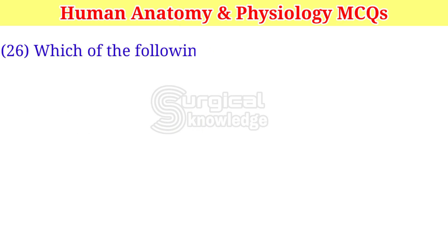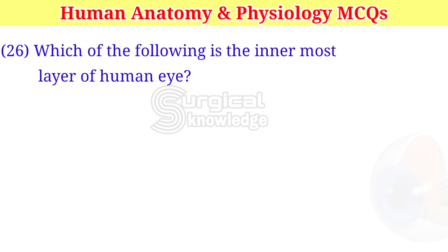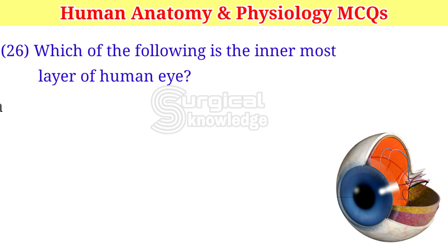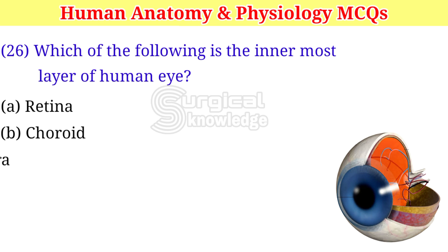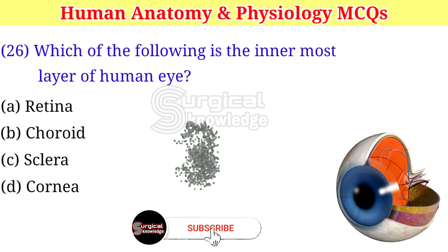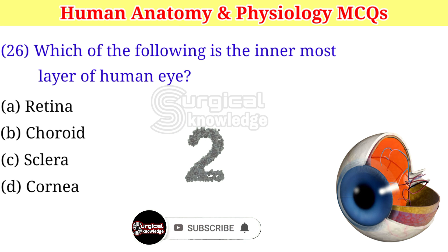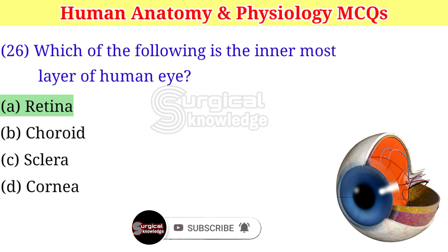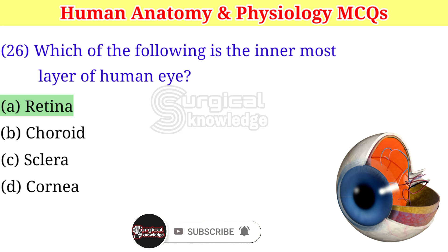Which of the following is the innermost layer of the human eye? A. Retina. B. Choroid. C. Sclera. D. Cornea. Right answer is retina.